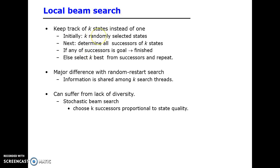Local beam search is basically hill climbing search with k states instead of one. We keep track of k states instead of one. Initially, k randomly selected states are chosen, and we determine all the successors of those k states.